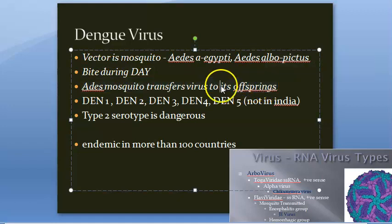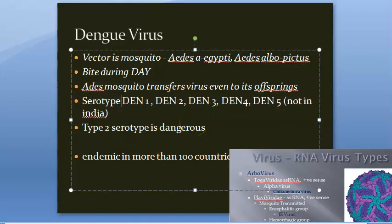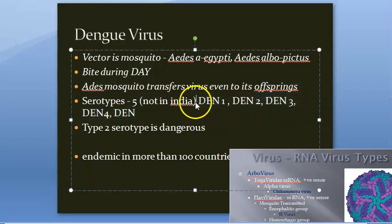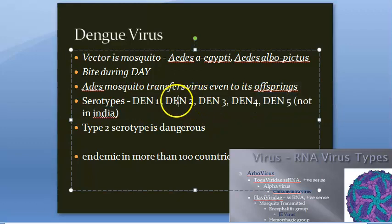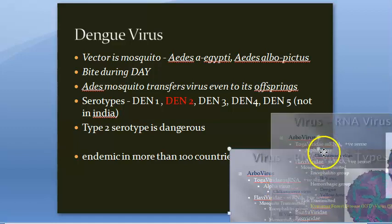There are five serotypes: Den 1, Den 2, Den 3, Den 4, and Den 5. Den 5 is not in India yet. Among these, Den 2 is very dangerous — especially when Den 1 comes first and then Den 2 follows, it is even more dangerous.